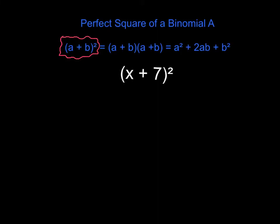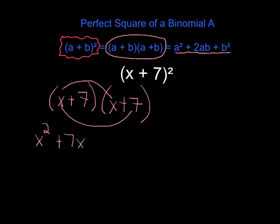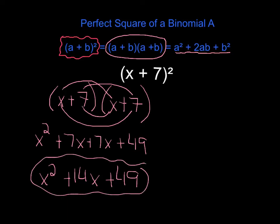So here's our first example. We have the binomial x plus 7 squared. To start out, let's think about what x plus 7 squared means — anytime you have something squared, you're multiplying it by itself. So that means x plus 7 times x plus 7. Let's first solve this by FOIL and then relate it back to the pattern. x times x is x squared, x times 7 is 7x, 7 times x is 7x, and 7 times 7 is 49. Combine like terms: x squared plus 14x plus 49.